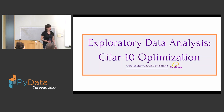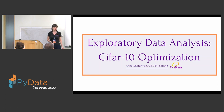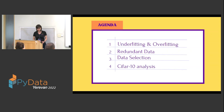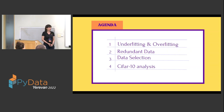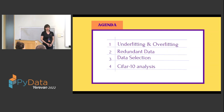The main idea here is how we can use data analysis to reduce datasets, and why we need to reduce them. We will cover overfitting, underfitting, the reasons, redundant data, and how we can select samples from our dataset. Finally, we will analyze CIFAR-10 and figure out how we can reduce this dataset while keeping the same performance.